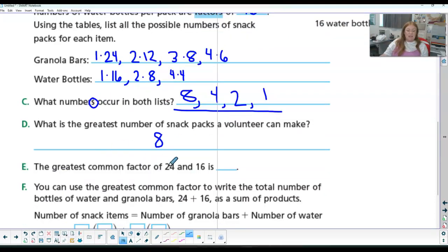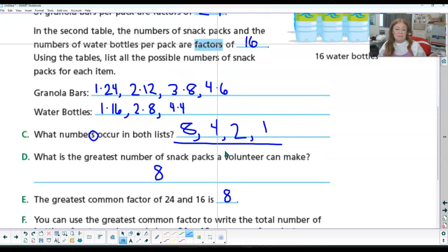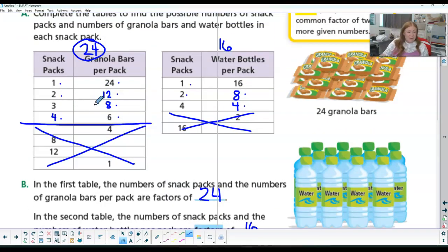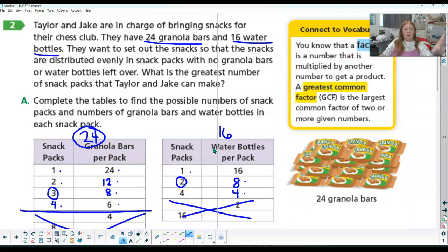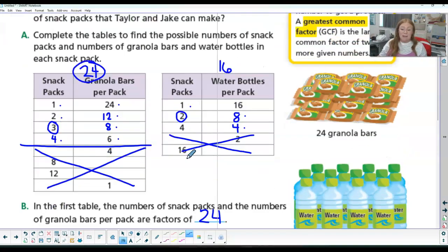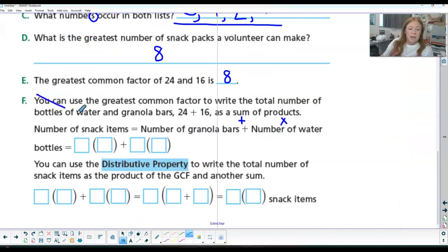So they're going to make 8 snack packs. They will have 3 granola bars and 2 water bottles. So everybody gets 3 granola bars and 2 water bottles for their chess club. And a happy surprise, you do not have to do F. So make sure you have A through E filled out.